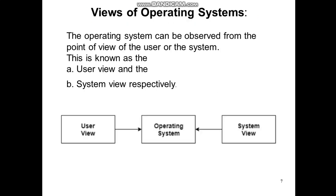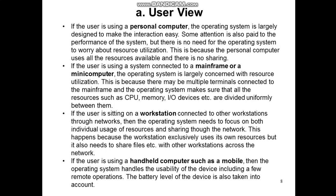Next, we are going to discuss the views of the operating system. There are two types of views: the user view and the system view. User view means how the users are going to view the operating system. A user may typically be using a personal computer, a mainframe or mini computer, or a workstation. Depending on which type of system they are using, the interface will appear differently. Nowadays users are mostly using mobiles, and on those devices various interfaces are available. While using a mobile, the battery level of the device is also taken into account.